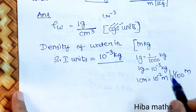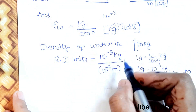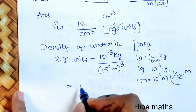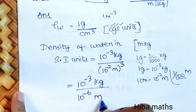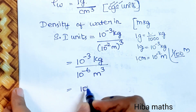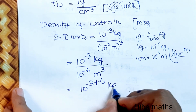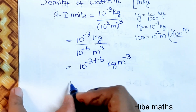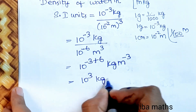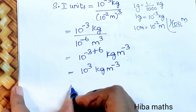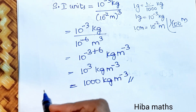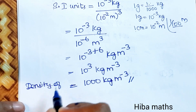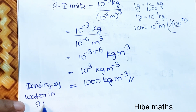One centimeter cube = (10⁻² meter)³ = 10⁻⁶ meter cube. So density = 10⁻³ kg divided by 10⁻⁶ m³ = 10⁻³⁺⁶ kg/m³ = 10³ kg/m³ = 1000 kg per meter cube. This is the density of water in SI units.